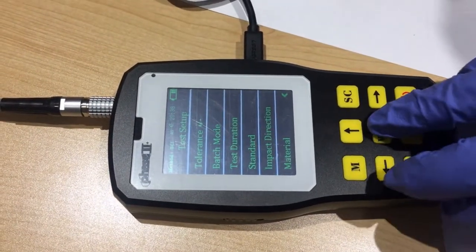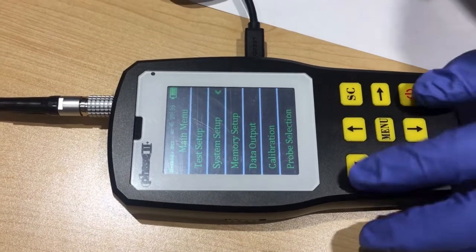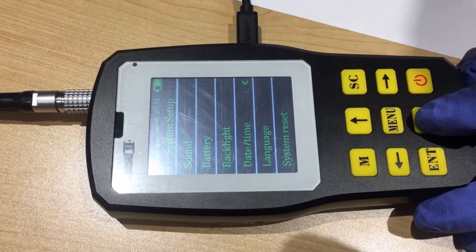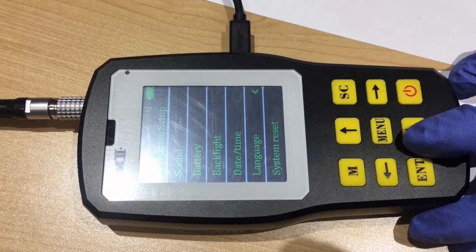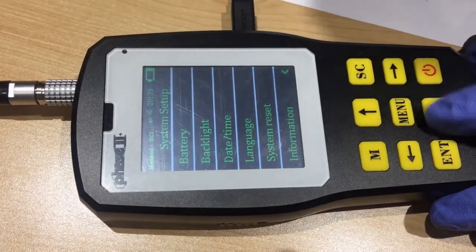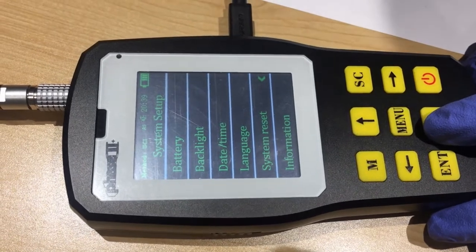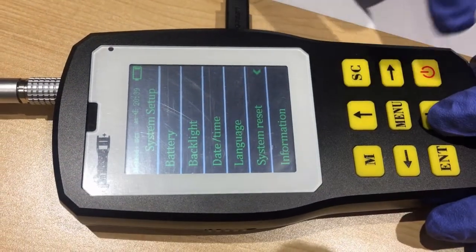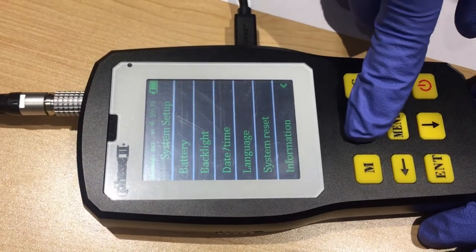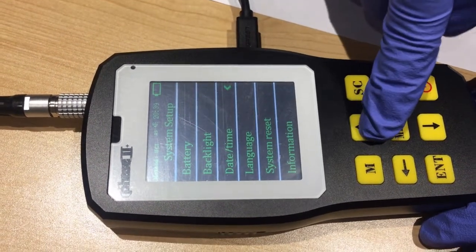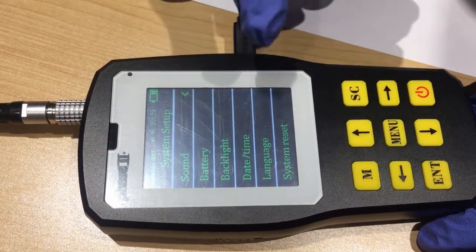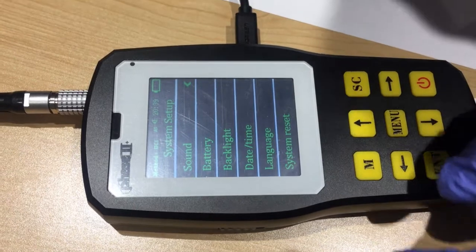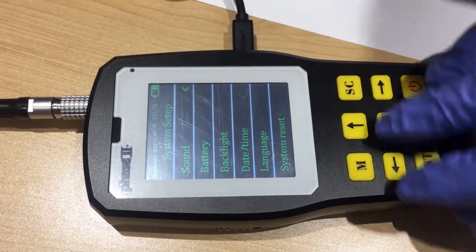Another thing we are going to cover is the system setup. Be careful with this one, especially for the language. You don't want to change the language you don't know. And the system reset, it requires a passcode shown on your instruction manual. And the information allows you to see some basic information of the machine. And also, you can adjust your battery, backlight, and sound. Turn on or turn off the sound, and your date and time here.